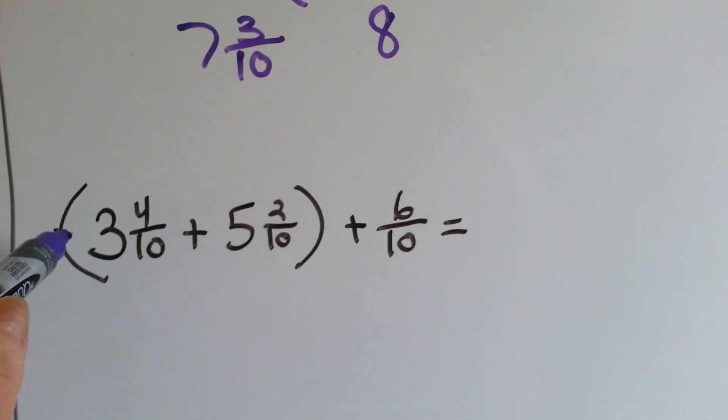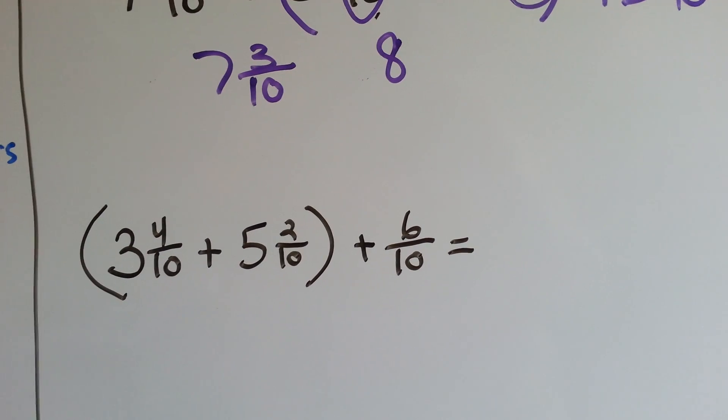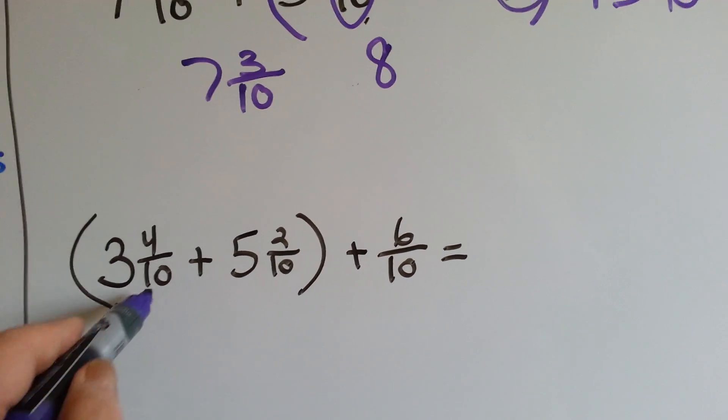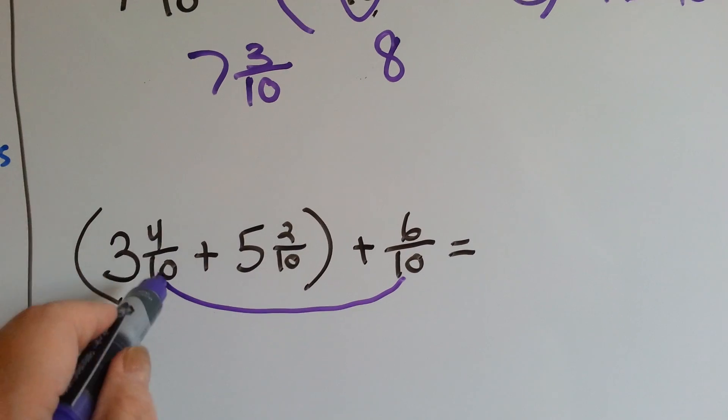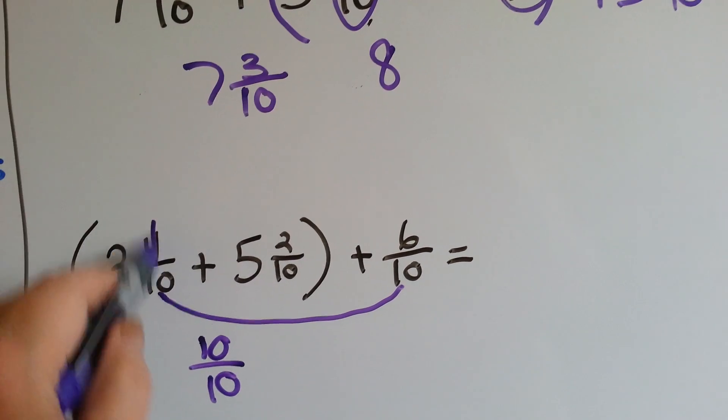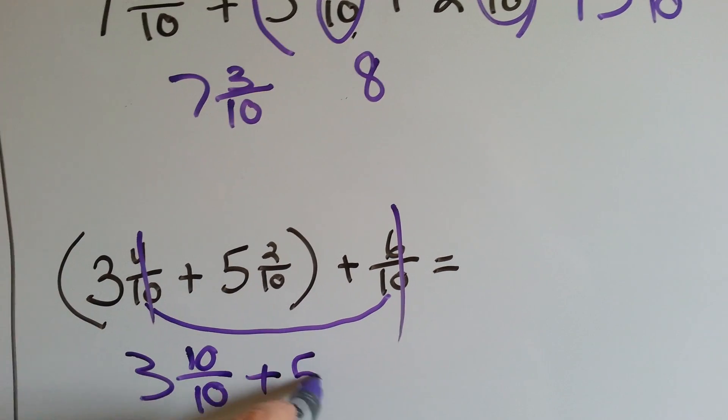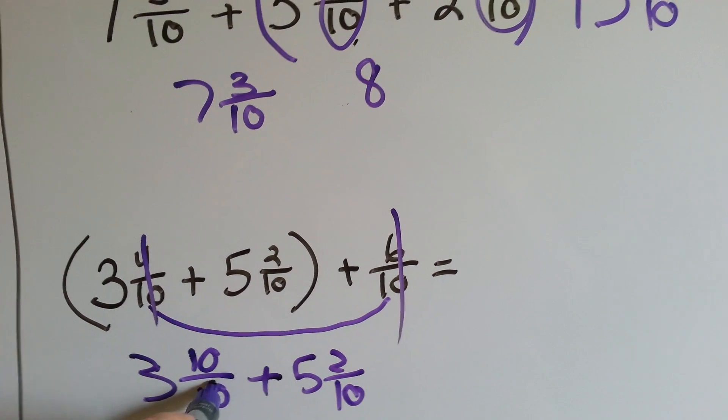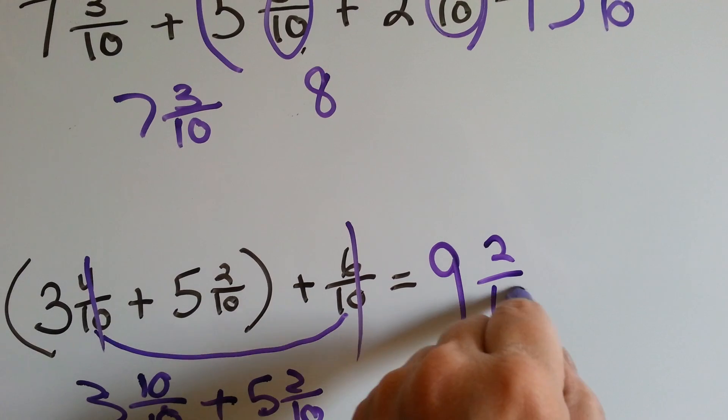Here's another one. 3 and 4 tenths plus 5 and 2 tenths plus 6 tenths. Are they grouped the best way? Actually, it would be better if we added these two together, because the 6 tenths and the 4 tenths is going to make a 10 tenth. Then we've got our 3 and then we've got our 5 and 2 tenths. So that's 3, 4 plus 5 is 9, and 2 tenths.